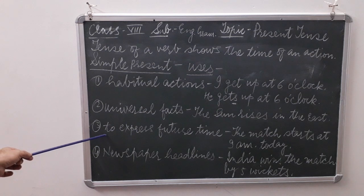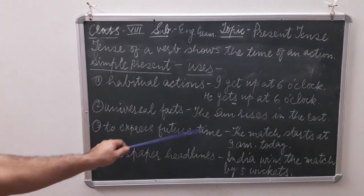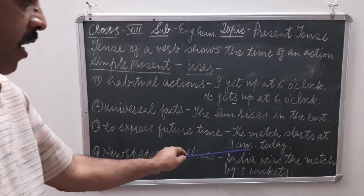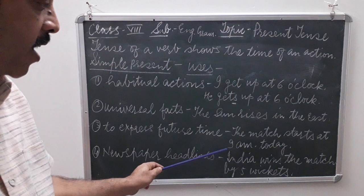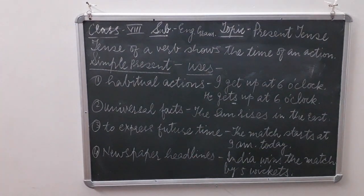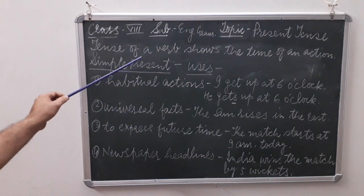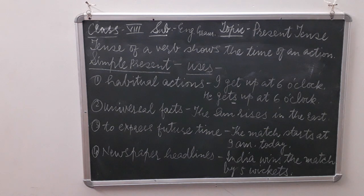Use number three: simple present tense is also used to express future time. For example, 'The match starts at 9 am today.' Here, 'starts' is simple present, but '9 am today' indicates that a future action is being expressed. So future time can be expressed using simple present.